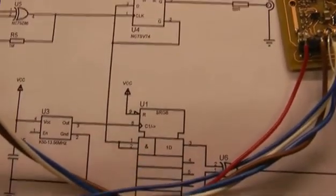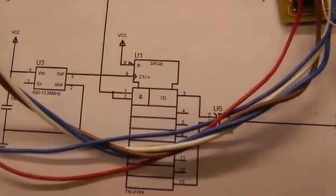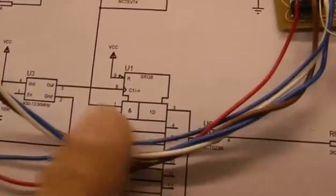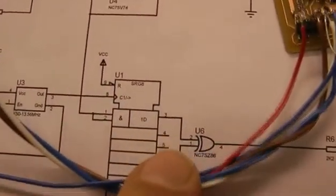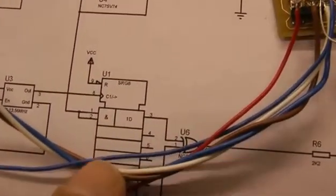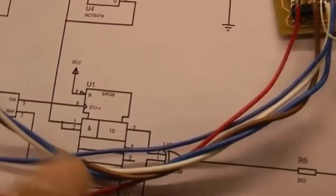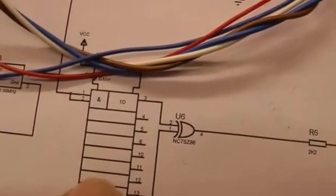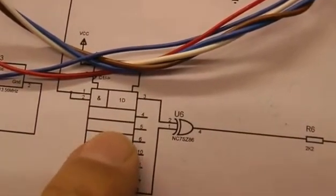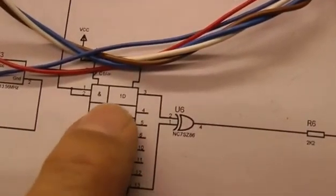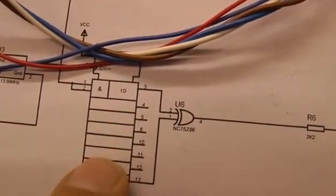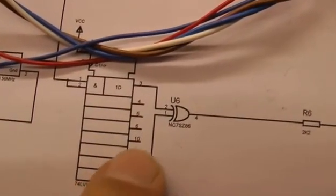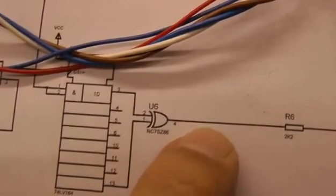That also travels through the remaining 7 stages of the shift register. So if we put an XOR gate across the shift register we're going to get some pulses. Those pulses are going to be 7 units in duration and there's going to be one on the leading edge of the 400k and one on the trailing edge.